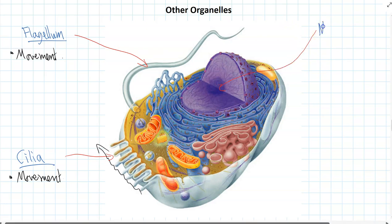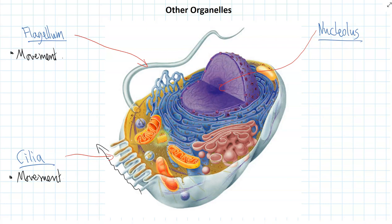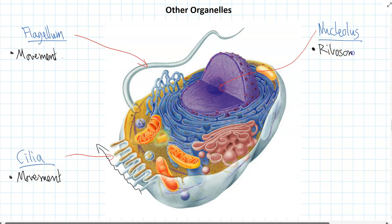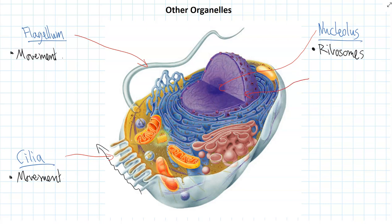Inside the nucleus, right in the middle, is called the nucleolus — an annoyingly similar name to the nucleus. It's the really dark coloured section you can see in the middle, and that's where ribosomes are actually made. Ribosomes are the factories that make proteins, and the nucleolus is the factory that makes the ribosomes themselves. Once made, they head out of the nucleus through the tiny holes called nuclear pores, then out to the cytoplasm to start producing proteins.